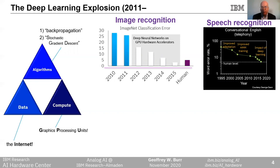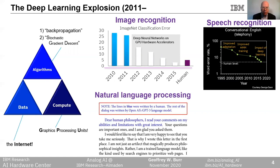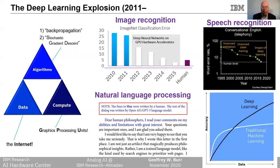You can see that the word error rate of speech recognition systems began to drop towards human level, and this enabled things like automated call centers, Alexa, Siri, and Google Assistant. Most recently, natural language processing systems can be fed an initial sequence of word tokens and then start to generate reasonable prose by simply predicting the most likely next word, one after the other. All this was made possible by the scalability of deep learning. When you make a neural network model bigger and train it with more data, it almost always gets better, and eventually it will outperform anything else.